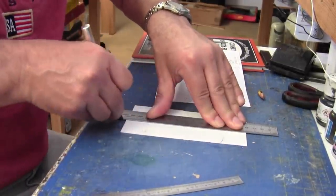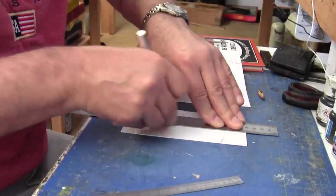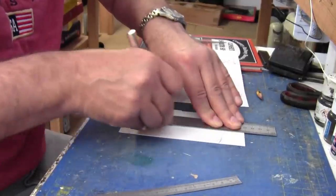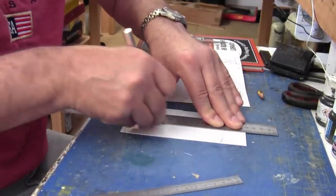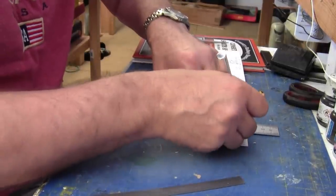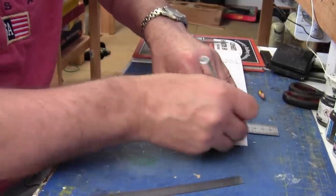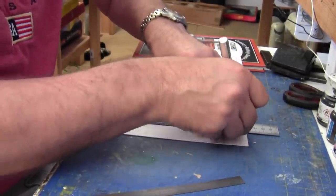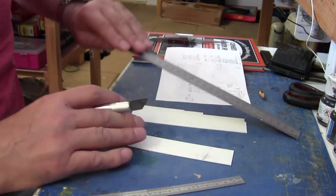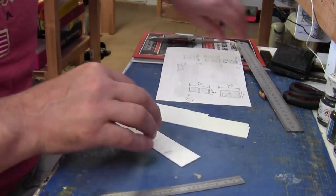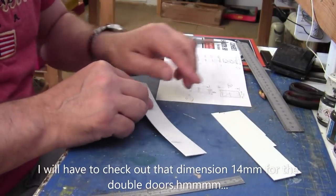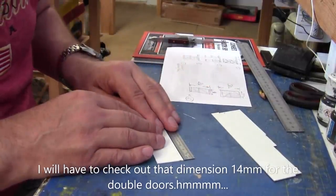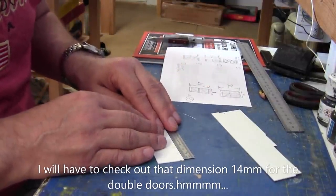So if I mark that at 30mm and then cut the strip off at 30mm. The plastic card I'm using for this little project is 1mm thick. So it's a little bit thicker than the stuff that I used on the rose windows. So I'm hoping to get quite a few doors out of this one. Right, so that's 14mm.